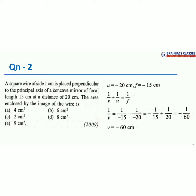We get v = −60 centimeters. Applying the magnification formula m = −v/u: substituting −(−60) / (−20), both minus signs cancel and we get m = −3. The minus sign indicates an inverted image. Since the question asks only about size and not about orientation, we take the magnitude of magnification, which is 3.